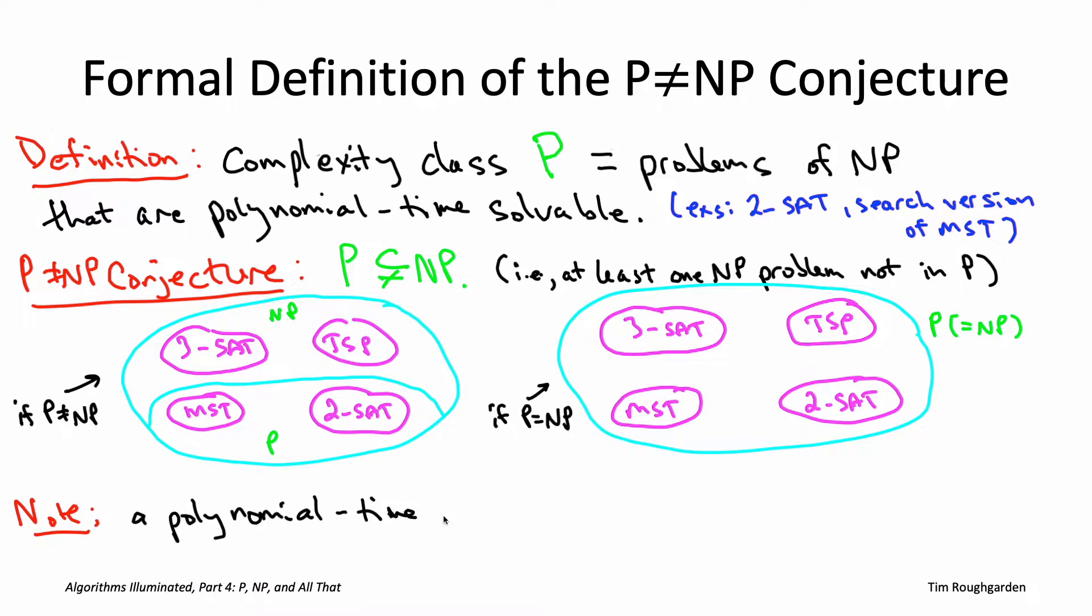Let's note that if you ever had a polynomial time algorithm for an NP-hard problem, you would be refuting the P not equal to NP conjecture. This at the bottom of the slide was our provisional definition of an NP-hard problem. Now that we have formal definitions both of NP-hard problems and of the conjecture, this is a precise mathematical statement: a polynomial time algorithm for any NP-hard problem would refute the conjecture.